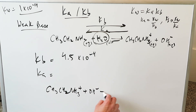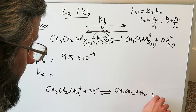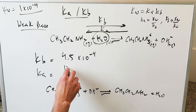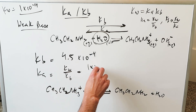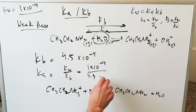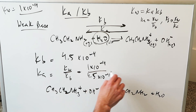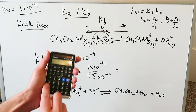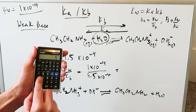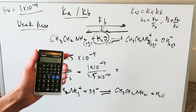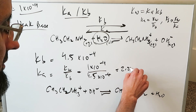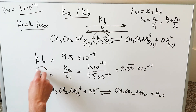The ethylammonium ion reacts with hydroxide to go in the other direction, giving you ethylamine and water. If you have to find the Ka, you do Kw divided by KB: 1 × 10⁻¹⁴ divided by 4.5 × 10⁻⁴, which gives you 2.22 × 10⁻¹¹. That would be your Ka.